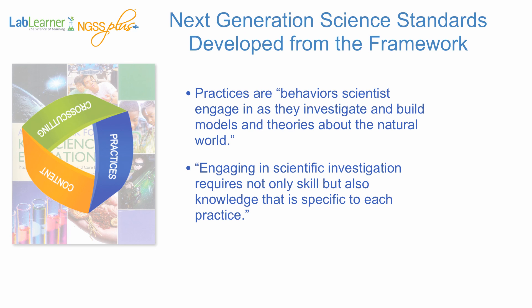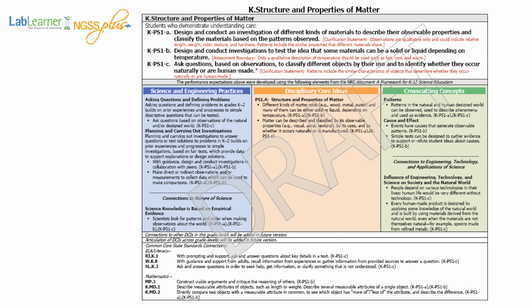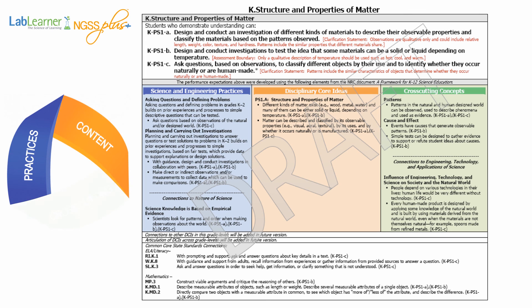Now we've discussed how the next generation science standards were developed. Let's take a look at how they are set up and what you need to know to implement them. What you are looking at here is one example of a content standard — a kindergarten standard. Here you will see the three central tenets of the K-12 framework and next generation science standards: cross-cutting concepts, content or disciplinary core ideas, and practices.